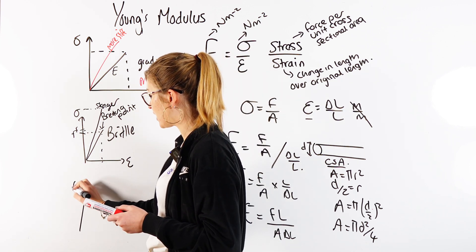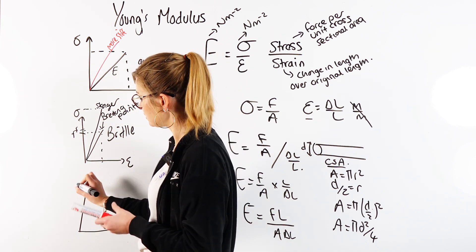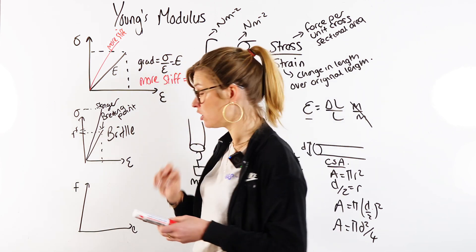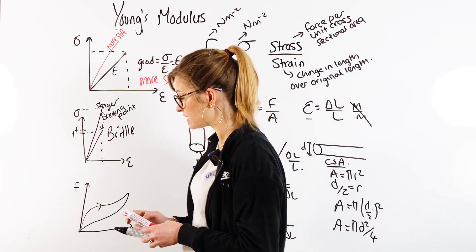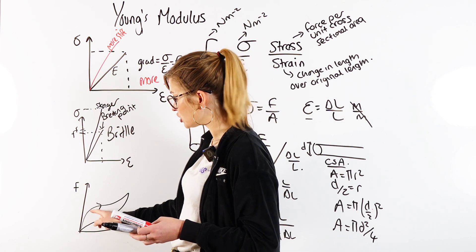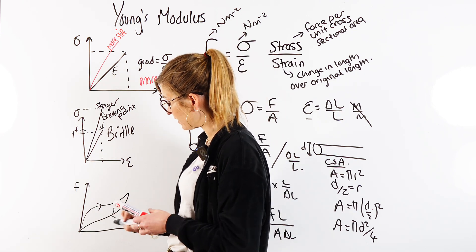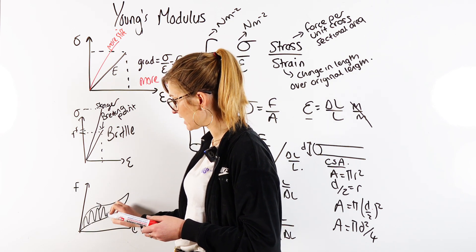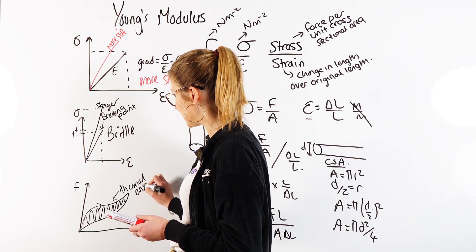You might also see a force against extension graph, similar to Hooke's Law, with a loading curve and an unloading curve. The area under the loading curve tells you the energy put in, and the area under the unloading curve tells you the energy released. The area between those two curves represents energy stored as thermal energy — the energy you can't get back.